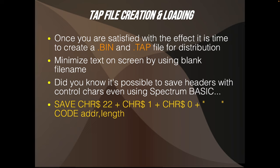With all these tricks in mind, you are ready to write your own tiny intro on the ZX Spectrum. Once you are satisfied with the effect, it's time to create a binary and tape file for distribution. People often minimize the text on screen by using a blank file name, which is fine. But did you know it's also possible to save headers with control characters even in ZX Spectrum Basic? For example, you can give a control character that goes to the top left corner and starts clearing with spaces, giving you a sort of clean screen at the start of your intro.